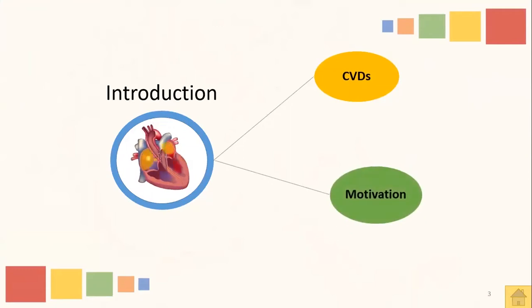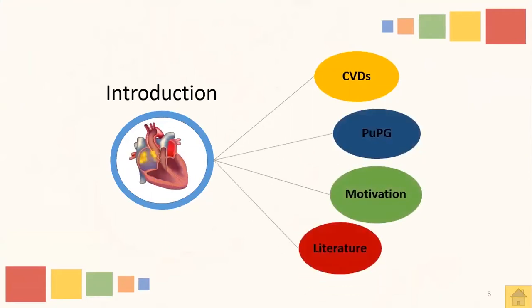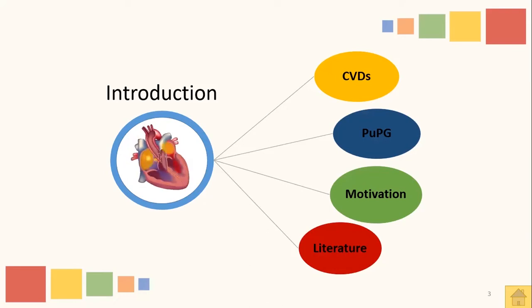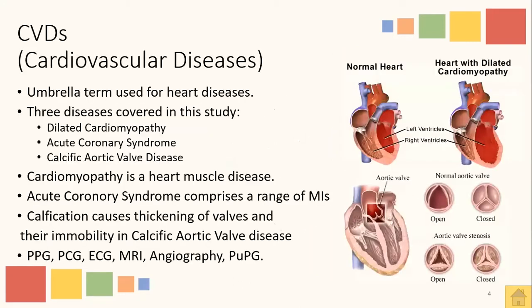Starting with the introduction, I would like to introduce the study by first explaining the concept of cardiovascular diseases, then I will discuss the pulse plethysmograph signals, then I would like to talk about the motivation behind the study, and lastly some of the most recent research studies will be discussed. Cardiovascular diseases is an umbrella term used for all kinds of heart diseases. In this study we will cover three of them including dilated cardiomyopathy, acute coronary syndrome, and calcific aortic valve disease.